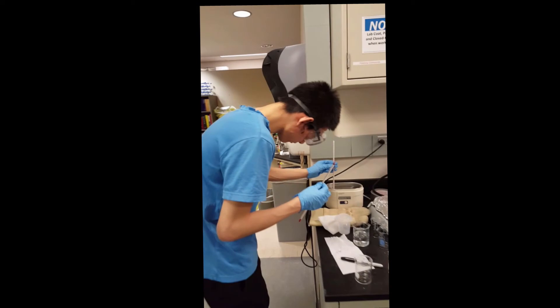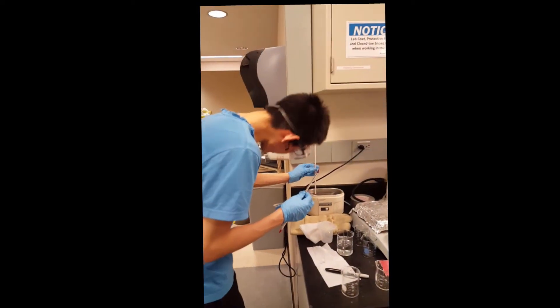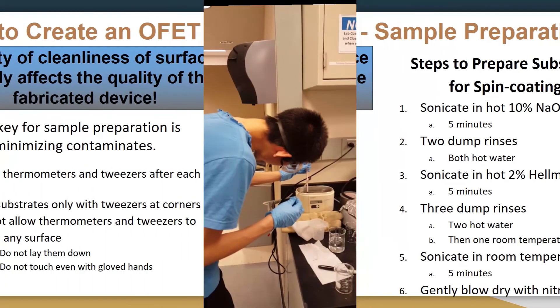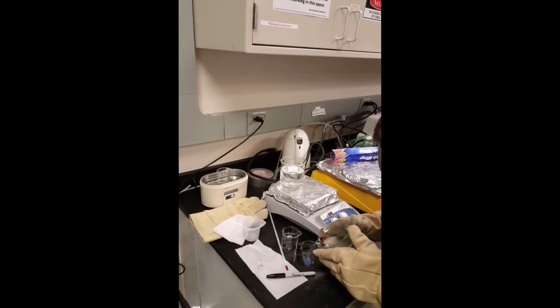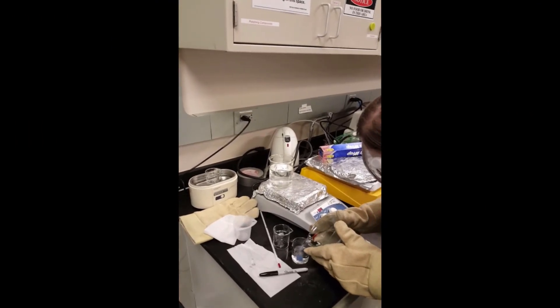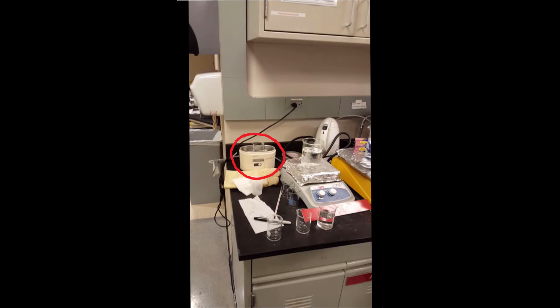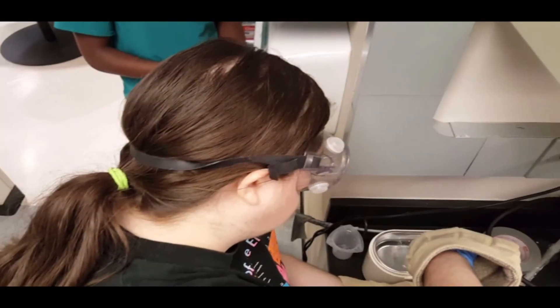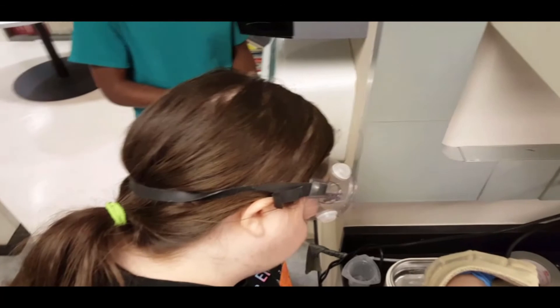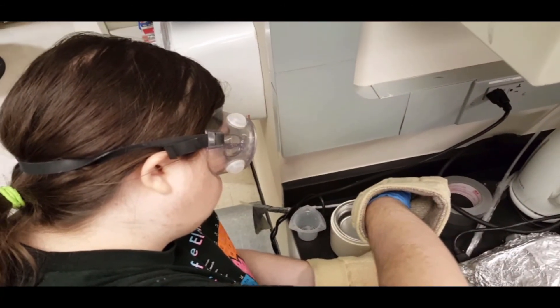Step 1: Sonicate in hot 10% sodium hydroxide for 5 minutes. Step 2: Perform 2 damp rinses in hot water. Step 3: Sonicate in hot 2% Helmanex solution for 5 minutes, then perform 3 damp rinses — 2 in hot water and 1 in cold DI water.